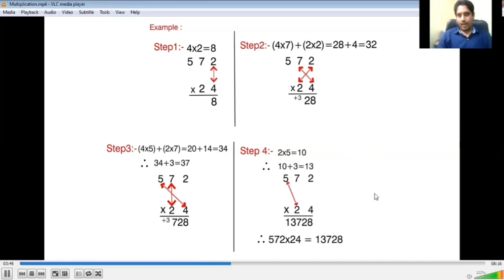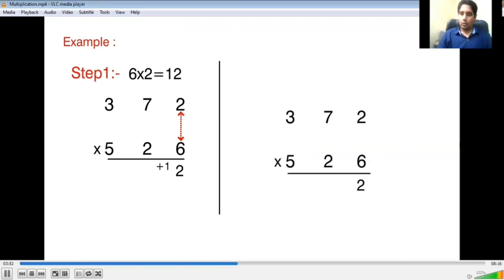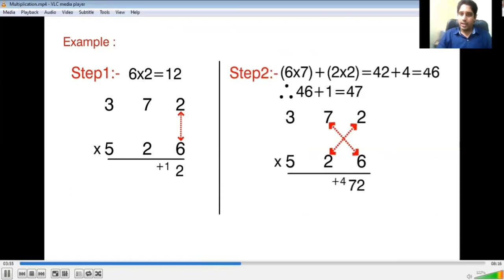Now I will go to a three digit number with another three digit number. So this time I will multiply 372 and 526. Step one: 6 into 2 equals 12. Since this is a two digit number, I will take 2 and carry forward 1 to the next step. Second step: 6×7 will multiply and 2×2 will multiply. 42 and 4 is 46. Carry forward from step one was 1, so 47. Take 7 and 4 will be carried forward to the next step.